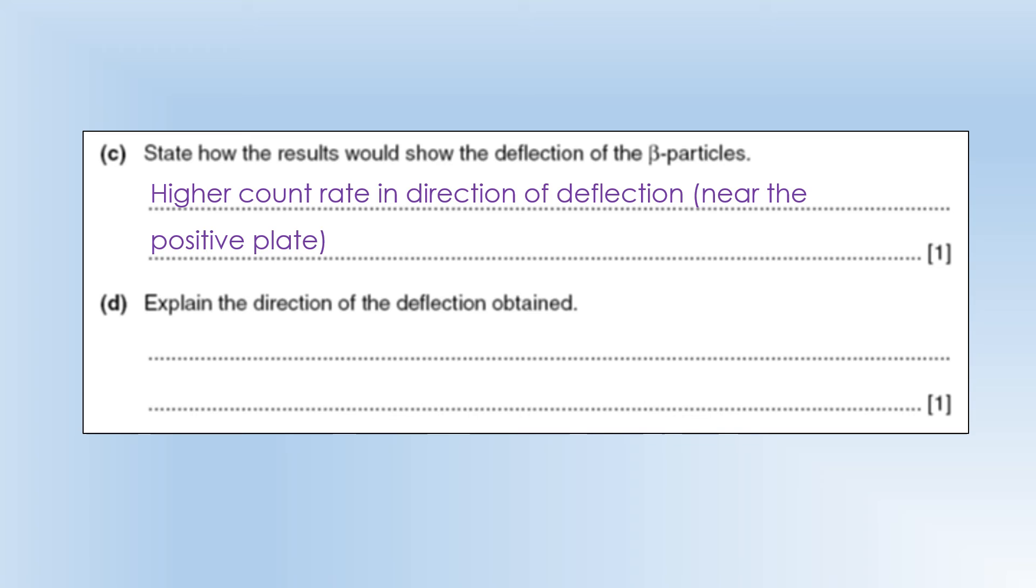So explaining the direction of the deflection, as well as the key is the fact that the beta particles are negatively charged, so they're attracted to the positive plate through the electric force.